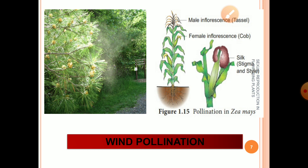Here you can see a picture of a pine tree where dust coming out is nothing but pollen grains — also known as 'sulfur dust' because of their yellowish color. Another example is Zea mays (maize), where tassels are present and are important to trap pollen grains. Wind pollination is very common in grasses. Always learn the characteristics of wind-pollinated plants to understand how they help in pollination.